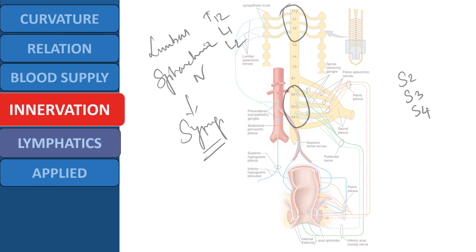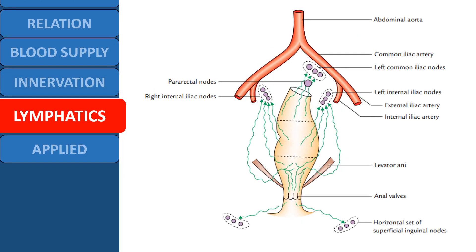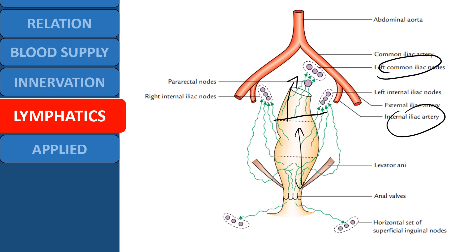Moving to the lymphatics, drainage is divided into upper and lower halves. In the upper half, lymph drains to the pararectal nodes and then to the left common iliac nodes. In the lower half, it predominantly drains into the internal iliac group of lymph nodes.